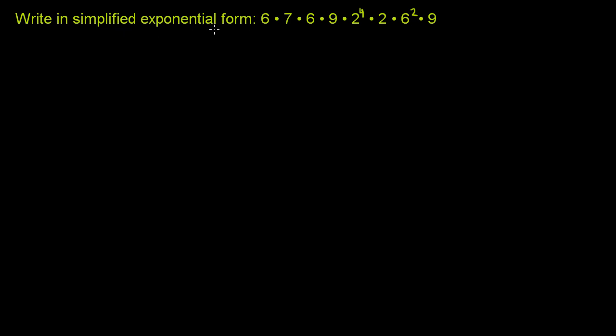Write in simplified exponential form. We have a product of a bunch of things here: 6 times 7 times 6 times 9 times 2 to the 4th times 2 times 6 squared times 9.